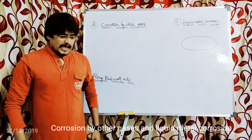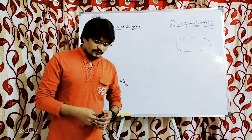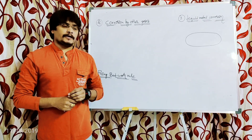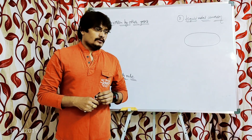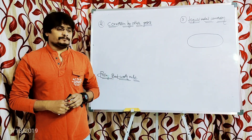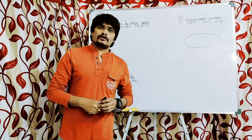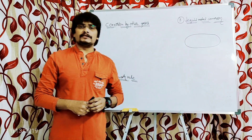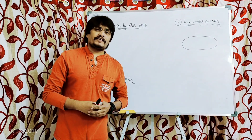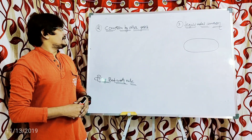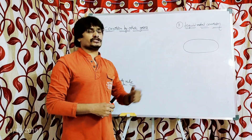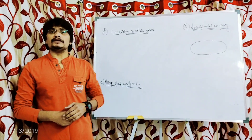Hi students. As part of the corrosion unit, I have already discussed one type of dry or chemical corrosion, which is oxidation corrosion or corrosion by oxygen gas. Today I am going to discuss the remaining two: corrosion by other gases and liquid metal corrosion, which are also part of dry or chemical corrosion.